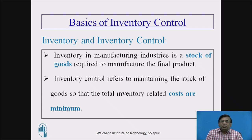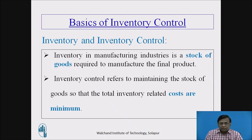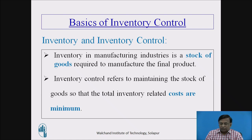Inventory control can be referred to as all the activities towards maintaining the stock of goods, so that our ultimate inventory-related costs will be kept to a minimum. Thus, inventory is the stock of goods — all the items that go into manufacturing the product — and inventory control is all the activities directed towards maintaining our inventory-related costs to a minimum level.